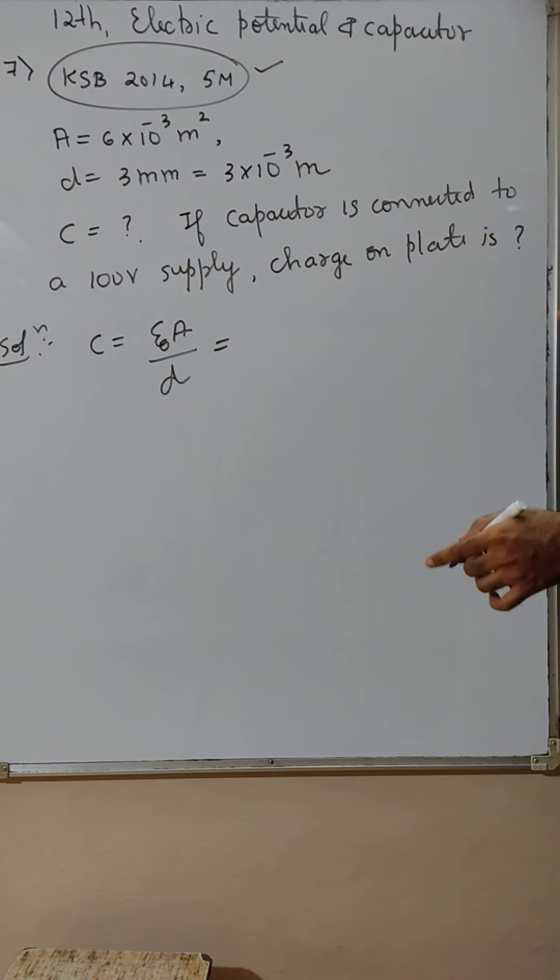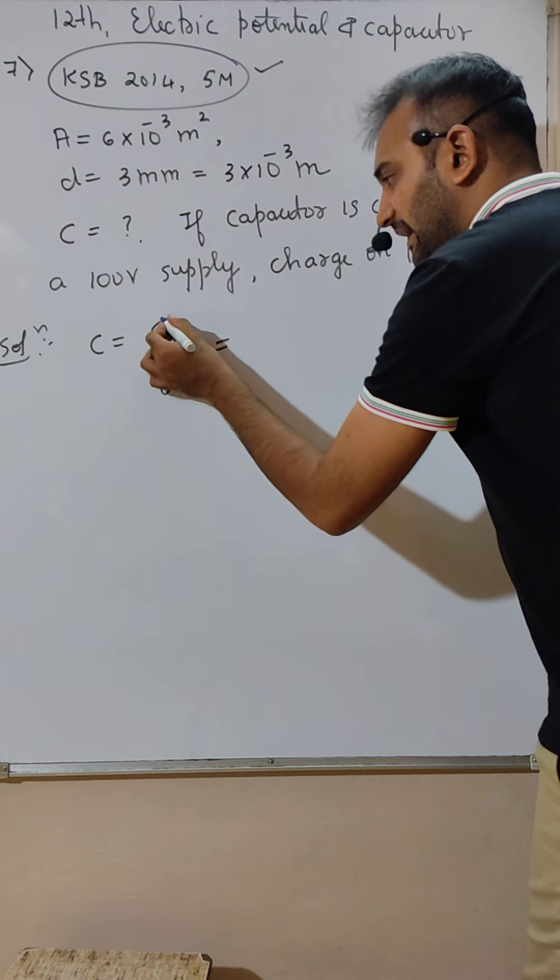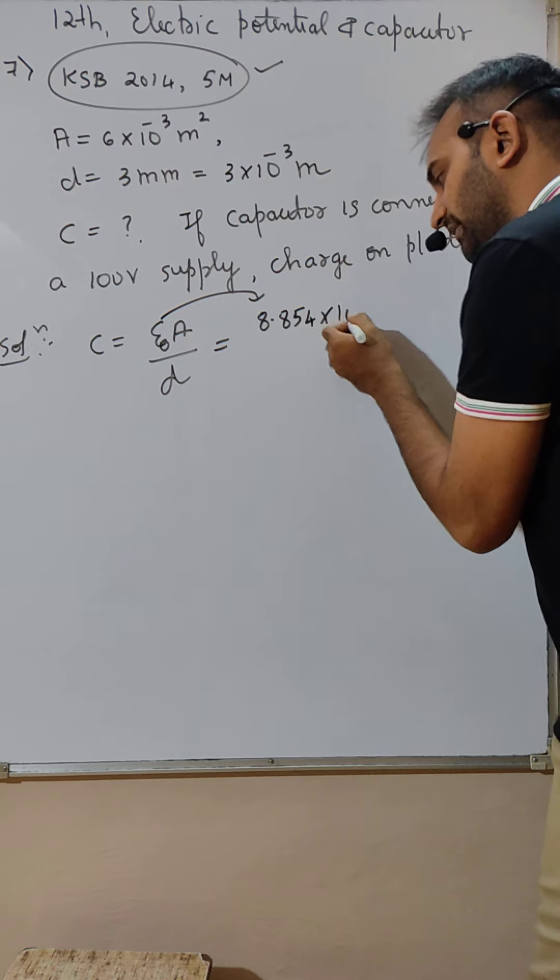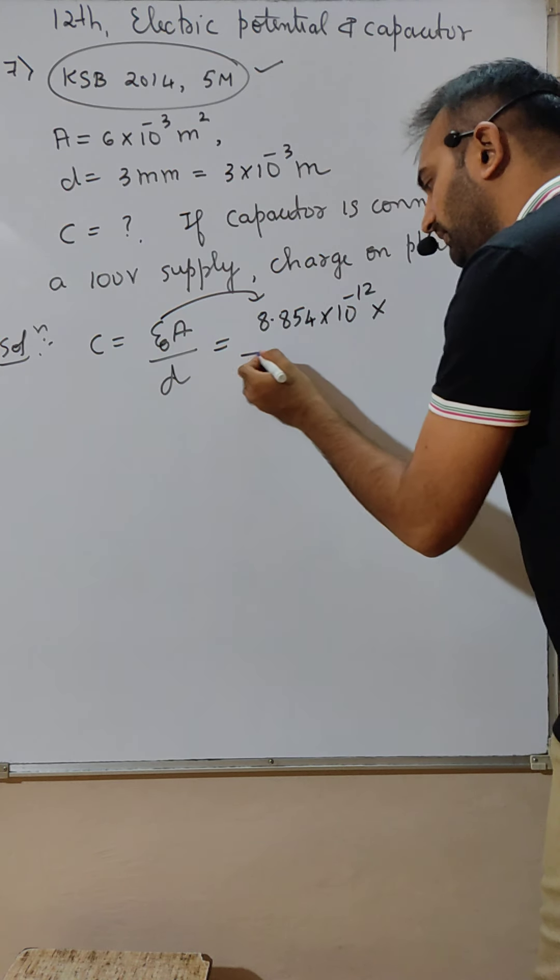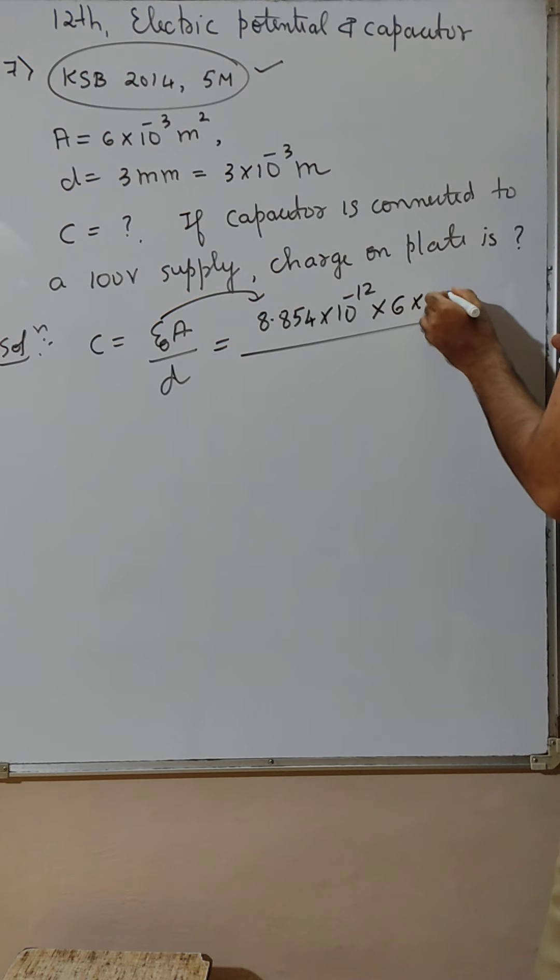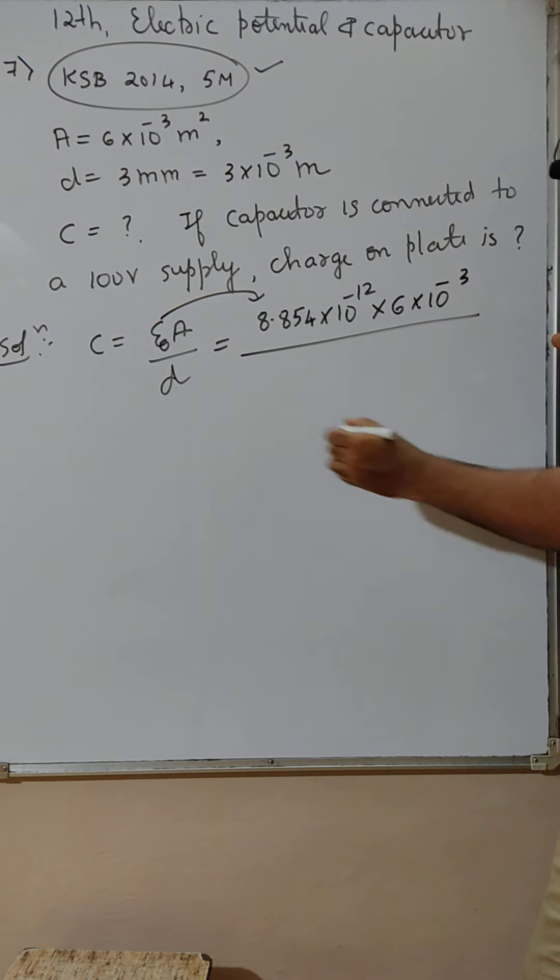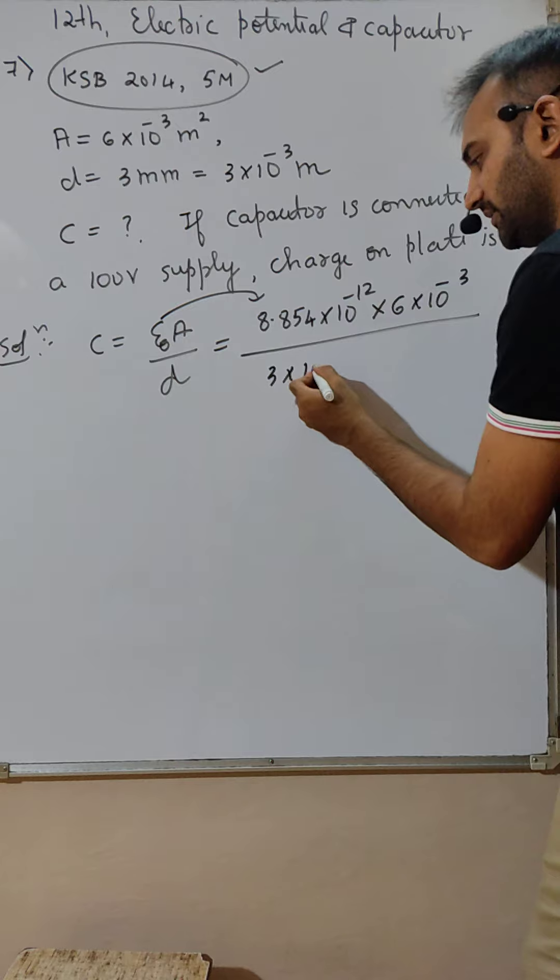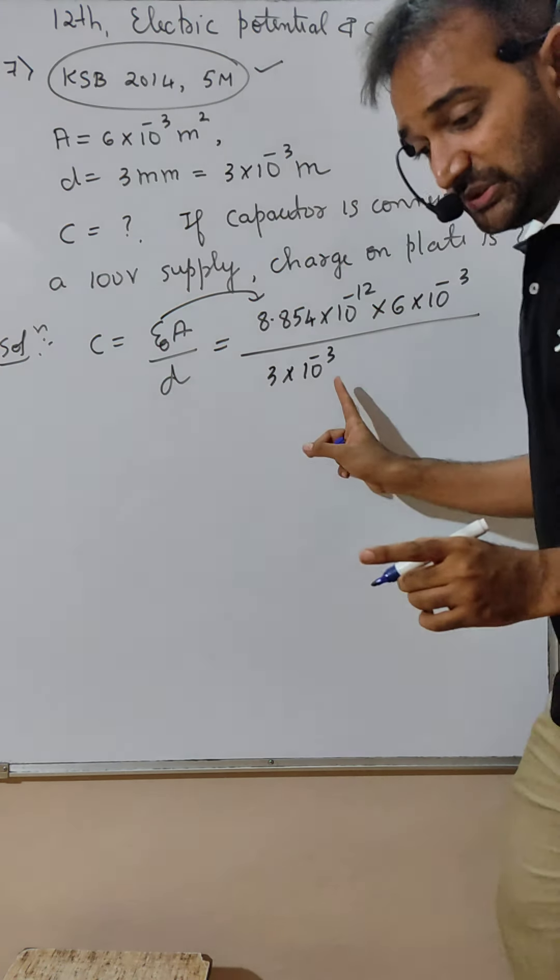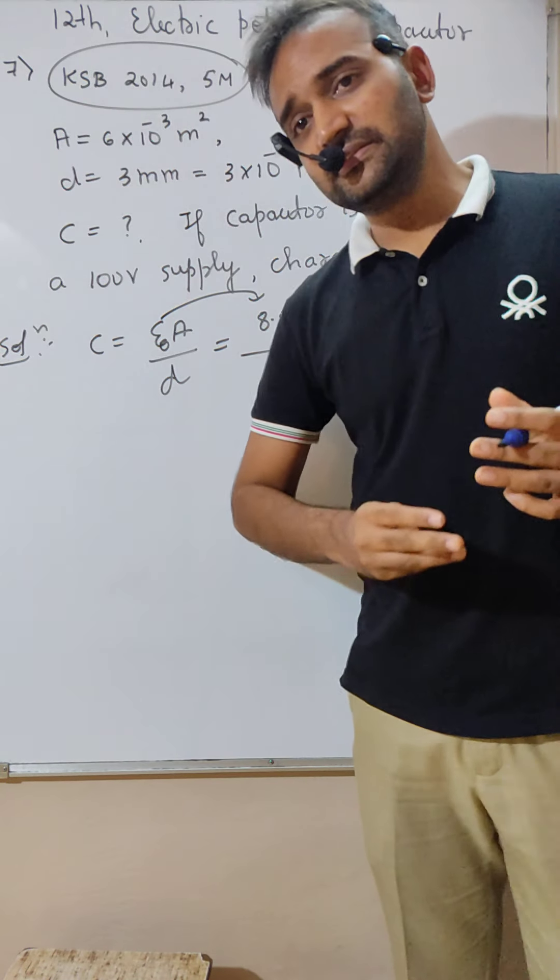Substitution is one mark. Epsilon not value is 8.854 into 10 raised to minus 12, multiplied by area 6 into 10 raised to minus 3, distance is 3 into 10 raised to minus 3.